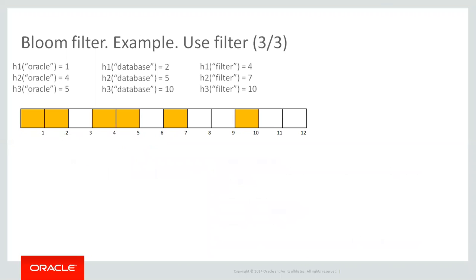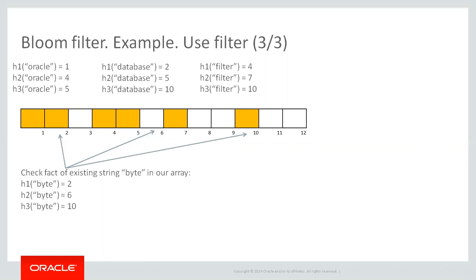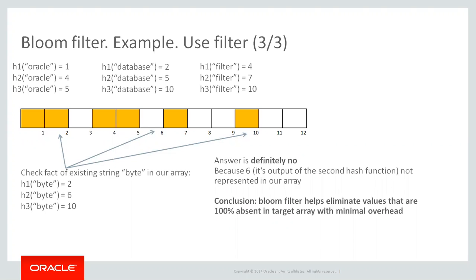The real power of the bloom filter is its 'definitely no' answers, because they help eliminate a significant amount of data. For example, if we check the word 'byte,' one element of the array is not true, so the answer is 'definitely no.' These definitive negative answers allow us to skip large portions of data entirely.